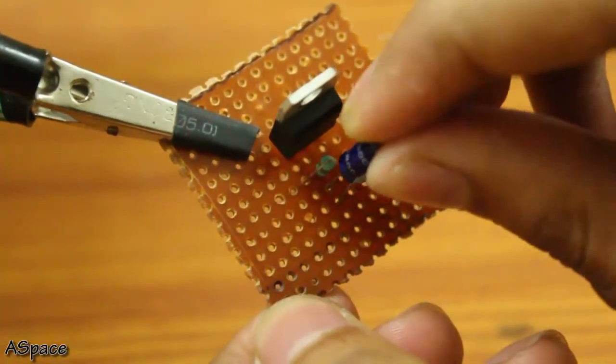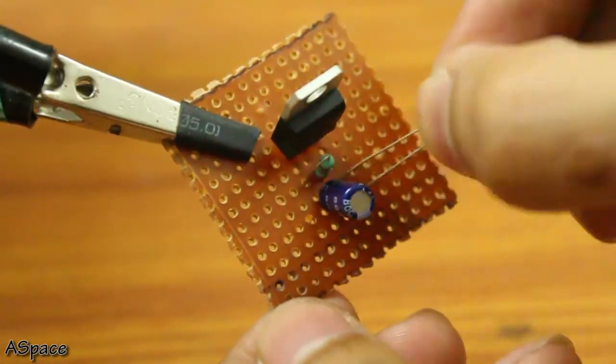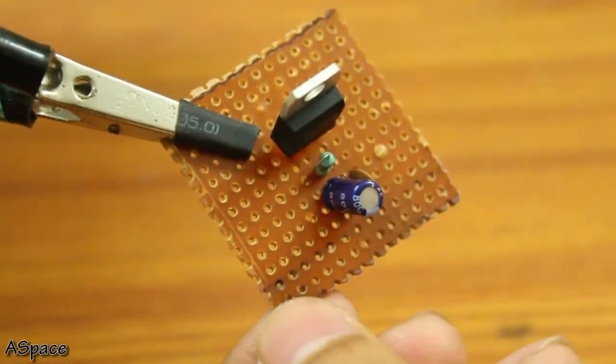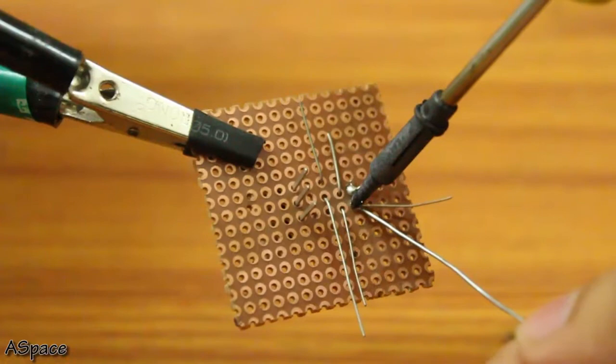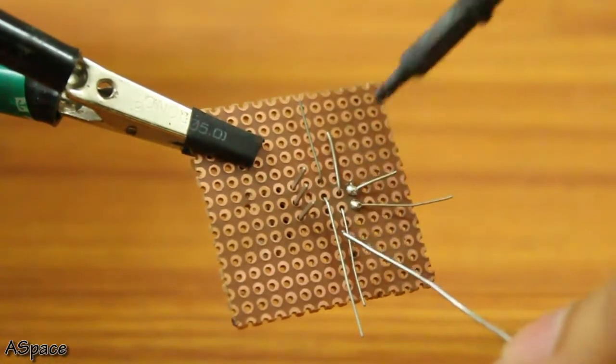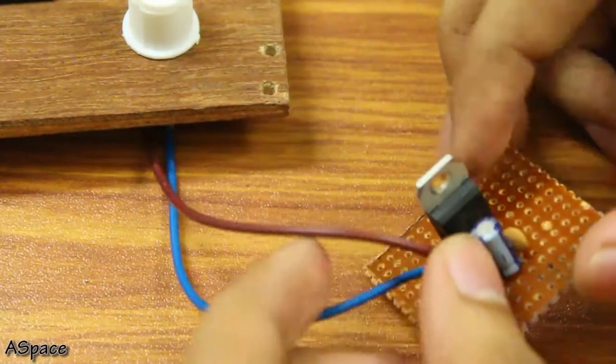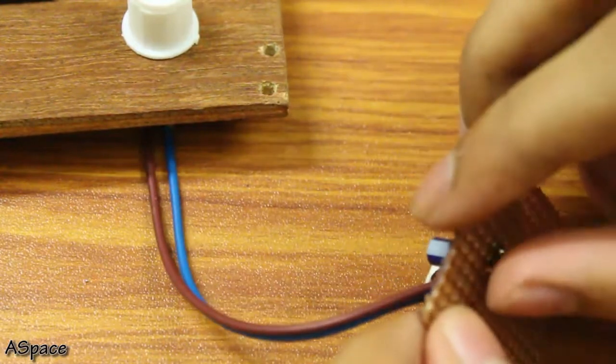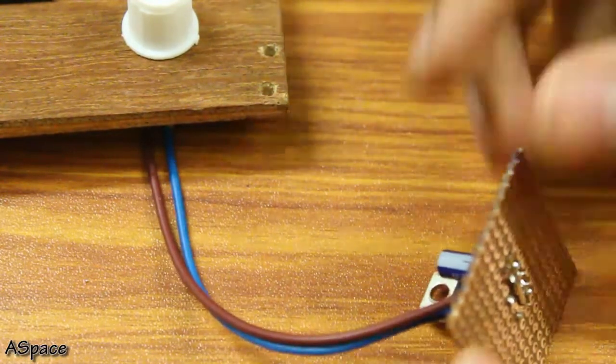Remember, one capacitor is electrolytic which means it is polarized. Do try to avoid solder bridges as the component connections are pretty close. Then the potentiometer and the voltmeter connections were made. I am using 14 gauge wire if you are curious.